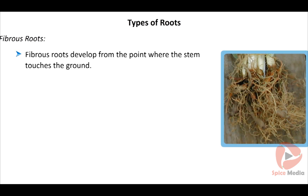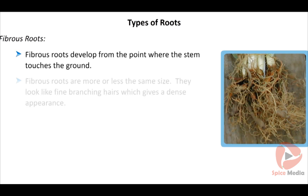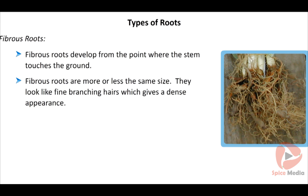In some plants, a bunch of roots develop from the point where the stem touches the ground. They constitute the fibrous root system. Examples: grass and paddy.